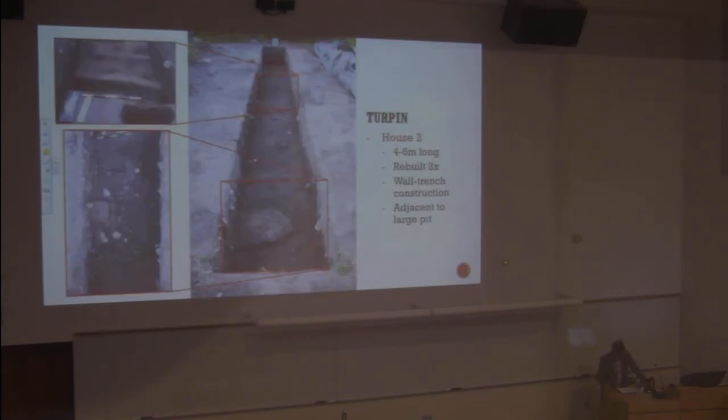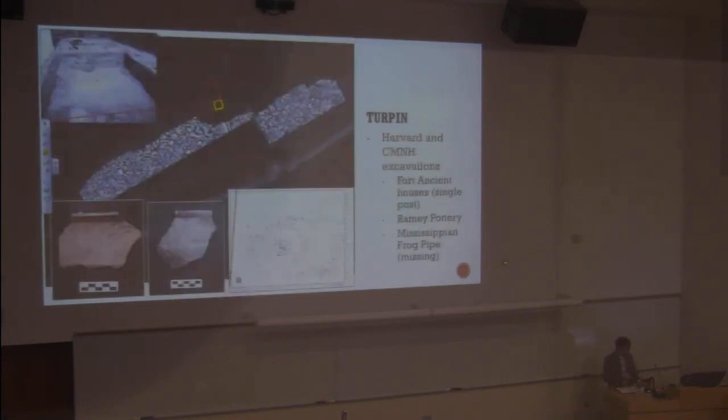House two had one trench placed across it. It was rebuilt twice, each building event using wall-trench construction. So there were two series of three parallel wall-trenches. And because of this, the house was somewhere between four and six meters in length. And this turned out to be a massive pit filled with FCR, deer bone, and freshwater mussel.